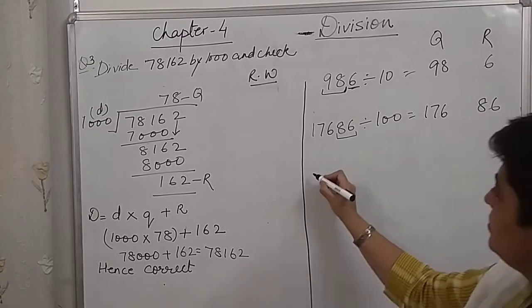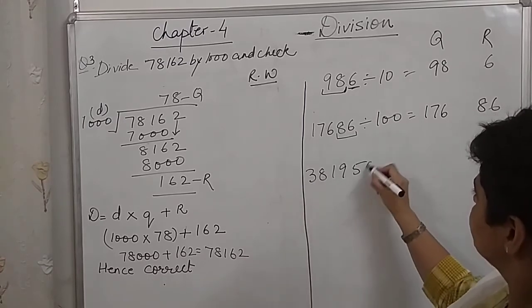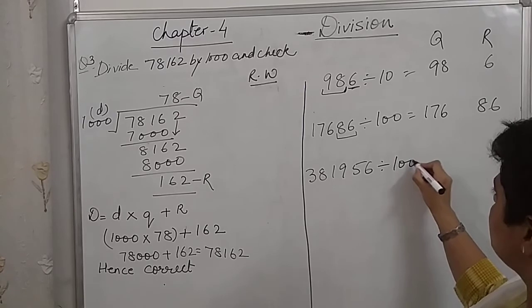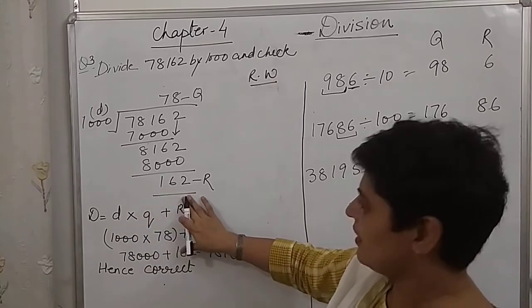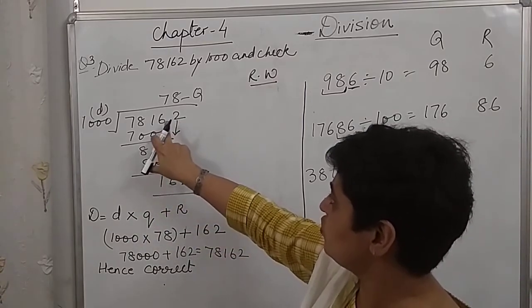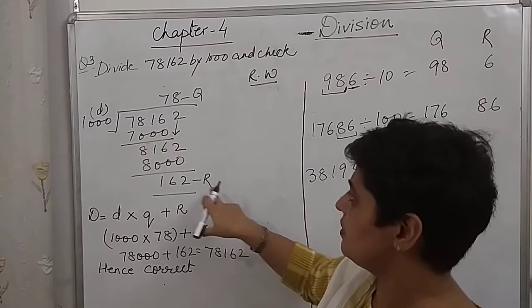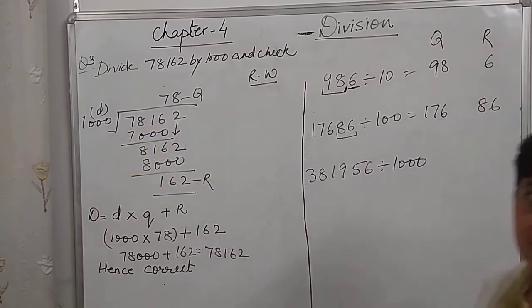Let's take another example. Divided by 1000. Even in this quotient, we had divided by 1000. So, did we get the last 3 digits as the remainder? Yes. The last 3 digits, 2, 6, 1, 162 is the remainder. And, rest of the digits, the first 2 digits are the quotient.